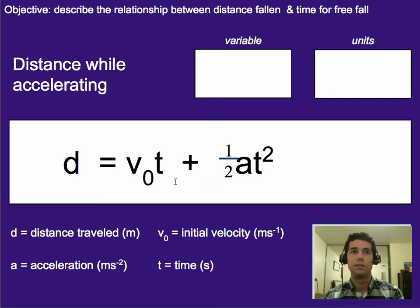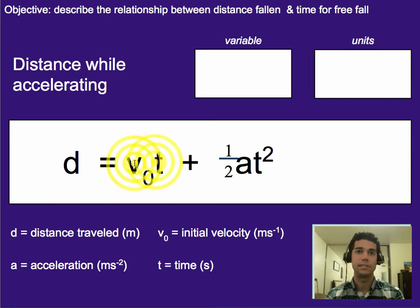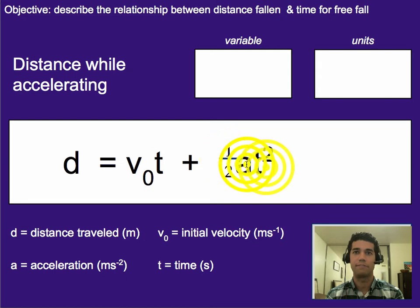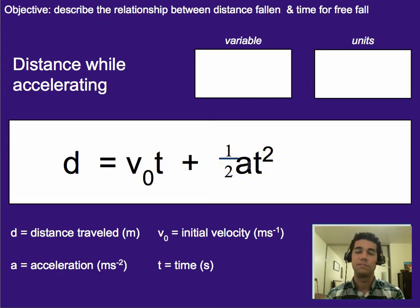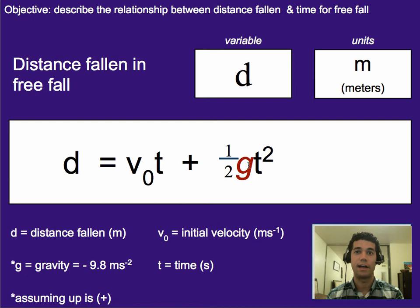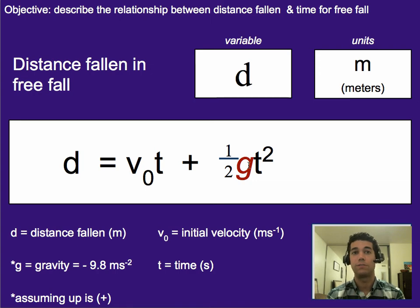Before we had looked at this idea of distance while accelerating — more horizontally — we had: beginning speed times time plus one-half a t squared. What we talked about last unit was that any time you have an equation involving acceleration, if the acceleration is just due to something falling, you can plug in g for the value of a. So here we can reuse that same equation, using 9.8, 10, negative 9.8, or negative 10 as the value of acceleration for anything that's falling.